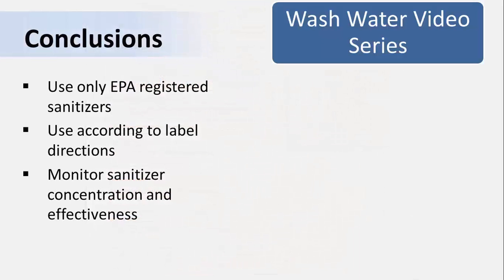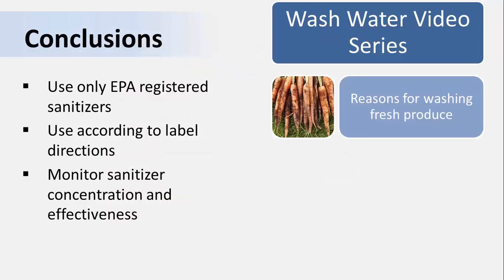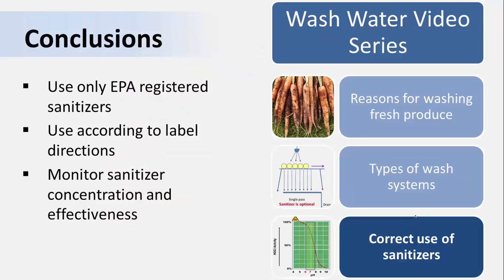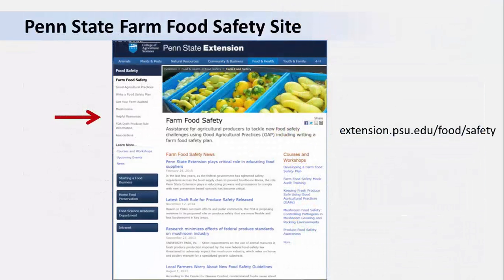This is the last video in our wash water series. To review, we identified different sanitizers and focused on chlorine to illustrate the importance of following government regulations, following label directions, and monitoring sanitizer concentration throughout the washing process to make sure we are killing microbes. For more information, please visit Penn State's Farm Food Safety site at extension.psu.edu/food/safety and click on Farm and Food Safety. Our site is also a good source of information on good agricultural practices and post-harvest practices.